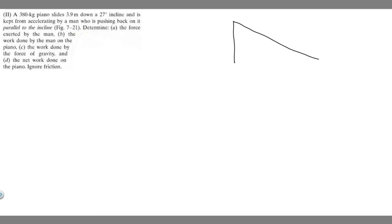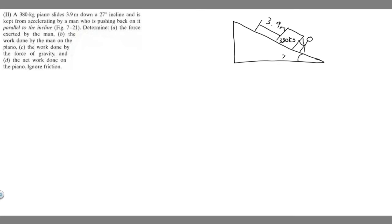Let's draw what's going on. Here's our inclined plane, and the piano slides 3.9 meters down it. I'll draw a box to represent the piano — 380 kg. The man is pushing back on the piano, and the incline is 27 degrees. Now let's start with part (a): determining the force exerted by the man.